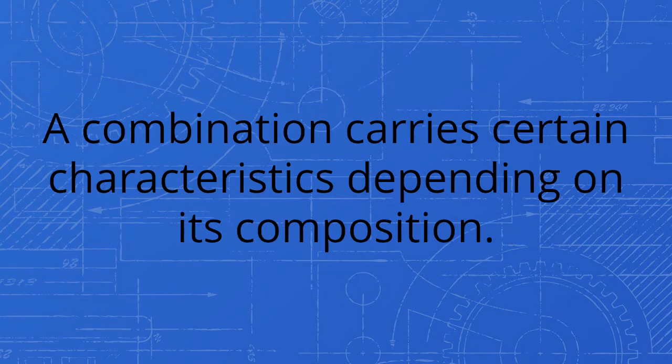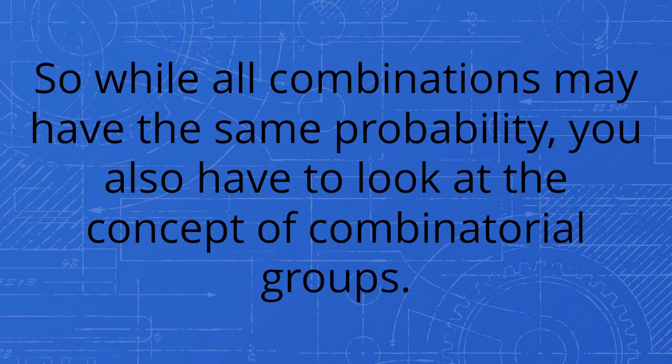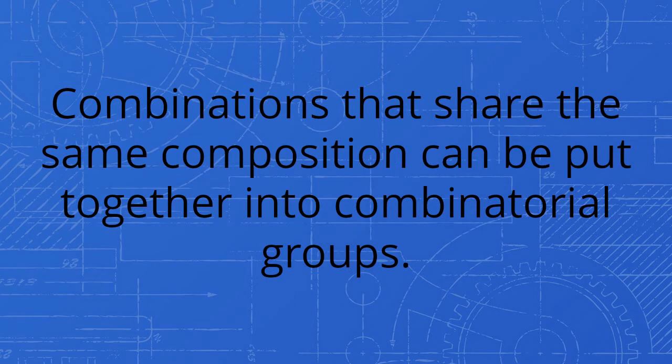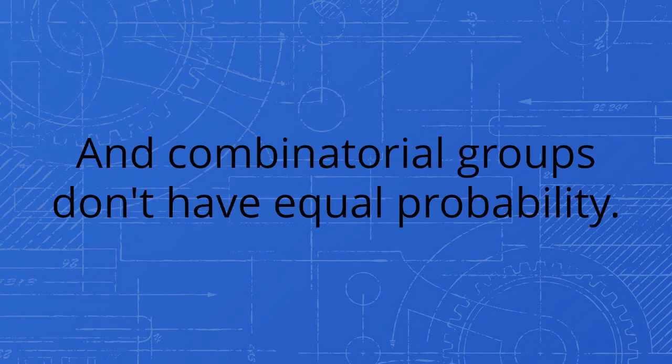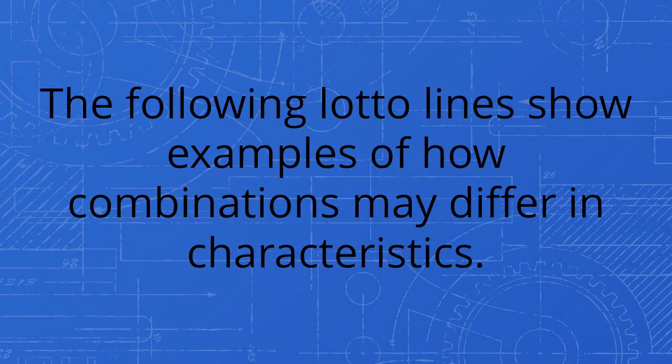Let me explain the difference between odds and probability from the context of combinatorial groups or patterns. A combination carries certain characteristics depending on its composition. So while all combinations may have the same probability, you also have to look at the concept of combinatorial groups. Combinations that share the same composition can be put together into combinatorial groups. And combinatorial groups don't have equal probability.